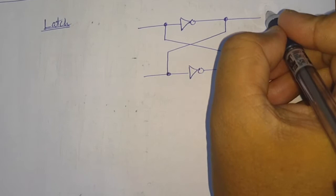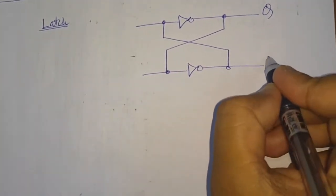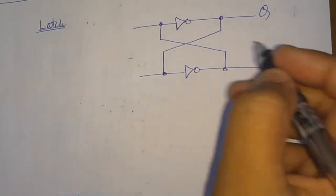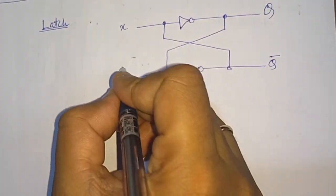And this is the output Q and this is the complementary output Q bar. And we have input X and Y.